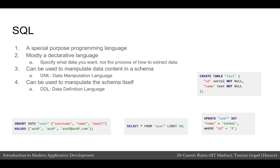There are two quick definitions that are important. SQL is both a DML and a DDL. A DML is a data manipulation language — a language to manipulate data, meaning to select, insert, update, or delete data. A DDL is a data definition language, which means a language to define the schema or structure in which data is stored and to change that structure.